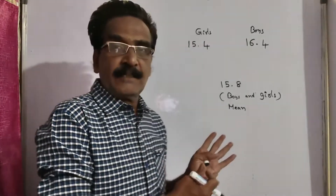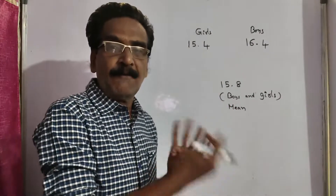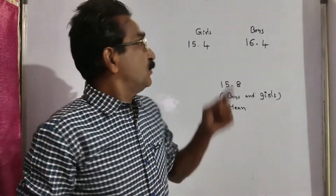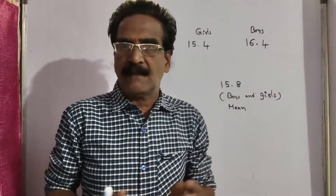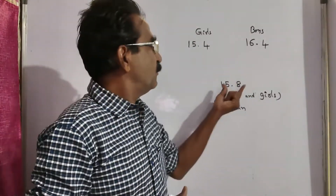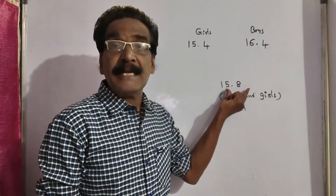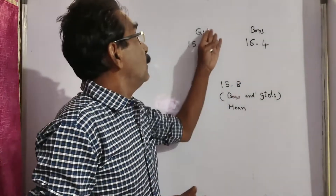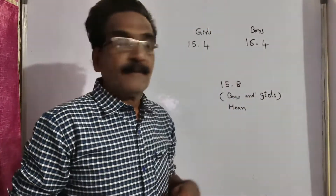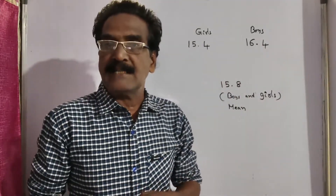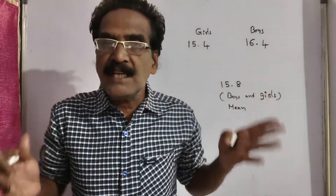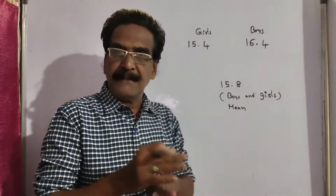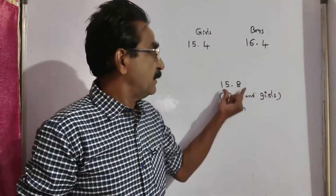That is, how many girls are there? How many boys are there? So, the number of boys and number of girls — that is the quantities ratio. The rule of allegation says two different qualities of things are mixed to get a given mean. This is the quality of students having average 15.4, and this is the quality of students having 16.4. If these two qualities of things are mixed, we get the mean of the total mixture, that is the total number of boys and girls.